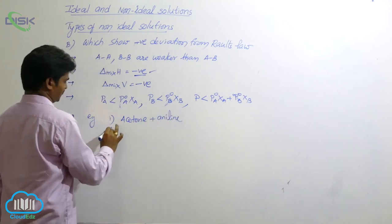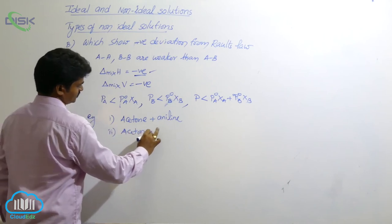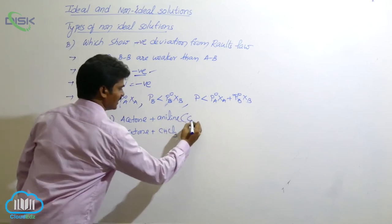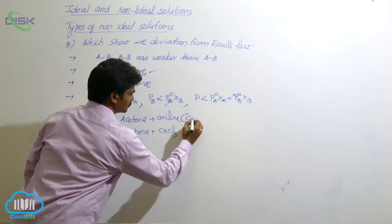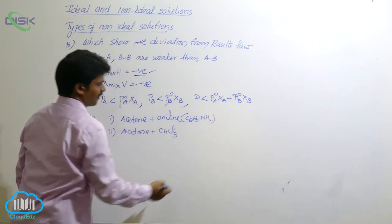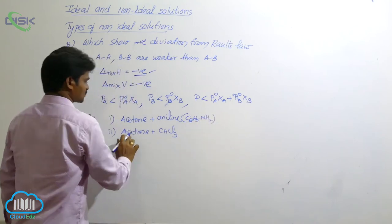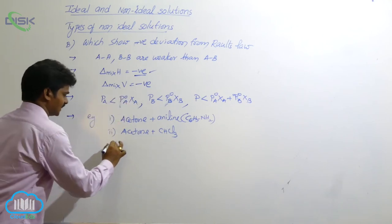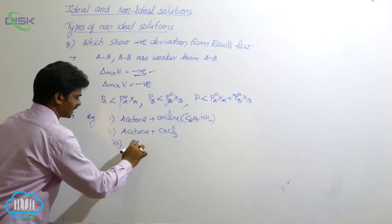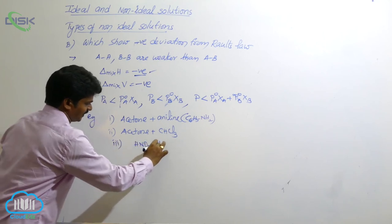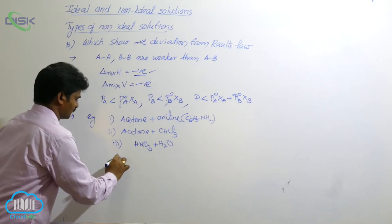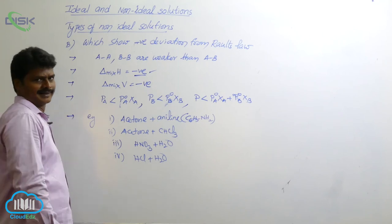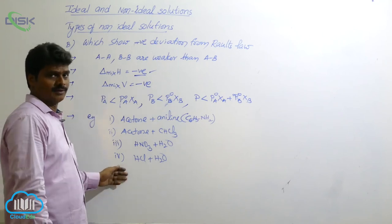Some examples: H₂O plus chloroform (CHCl₃), aniline (C₆H₅NH₂) plus water, nitric acid (HNO₃) plus water, and HCl plus water. These are some examples for non-ideal solutions which show negative deviation.